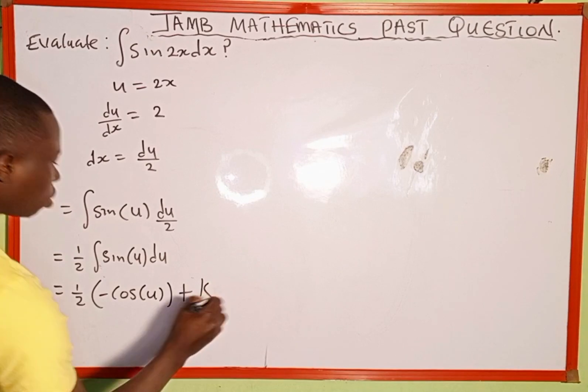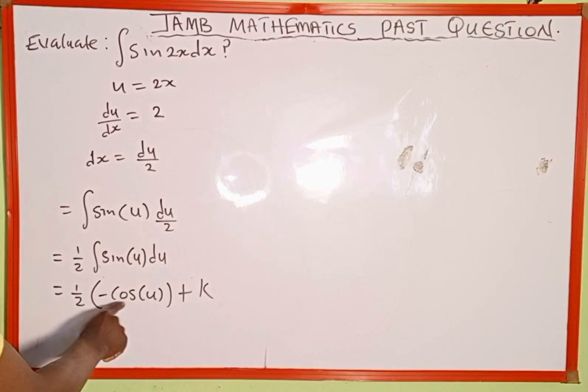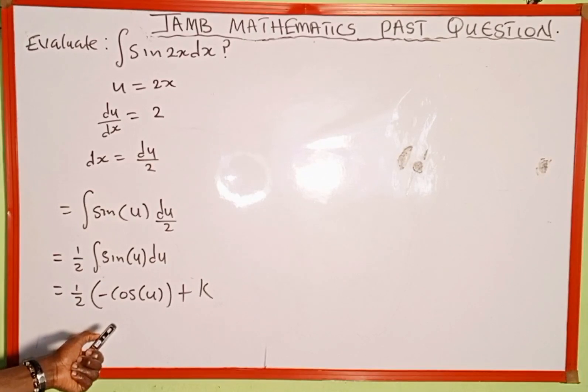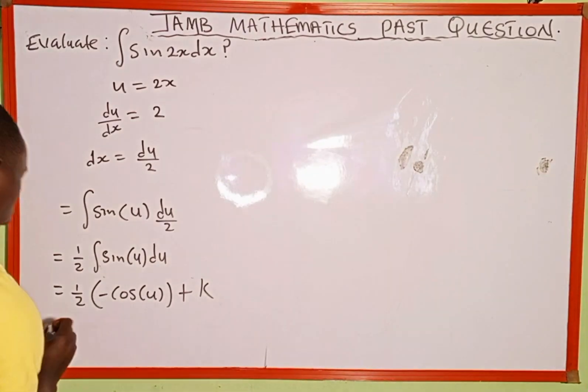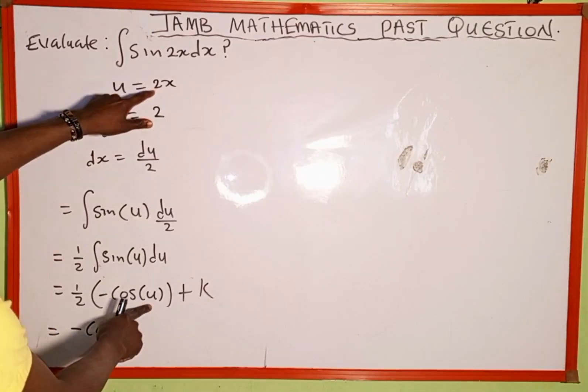Plus the integration constant. The next thing we're going to do is use this 1 over 2 to multiply by negative cosine u. This is going to be negative cosine of—remember we let u be 2x.